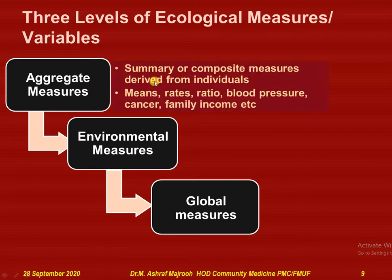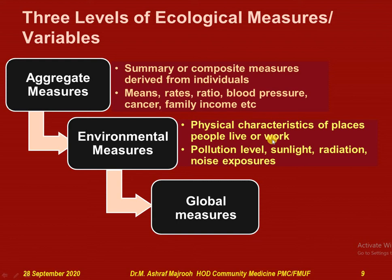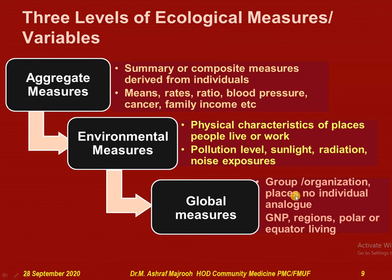Aggregate measures are summary or composite measures derived from individuals — examples include means, rates, and ratios of blood pressure, cancers, or family incomes. Environmental measures are the physical characteristics of places where people live and work — examples include pollution levels, sunlight, radiation, and noise exposure. Global measures relate to group or organization places where no individual analogs are measurable — examples include GNP, regions, poles, or equator living. These are variables where individual-level measurements are not available and are studied on an ecological basis.